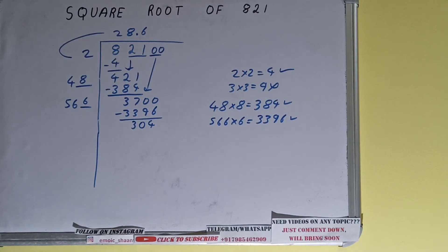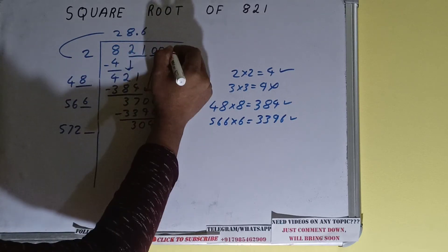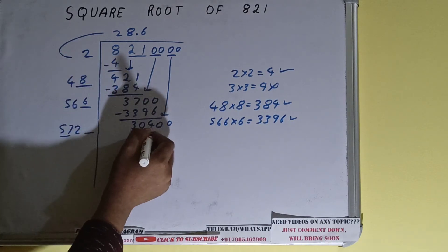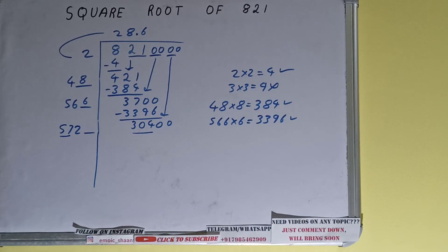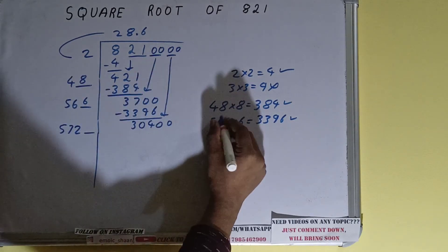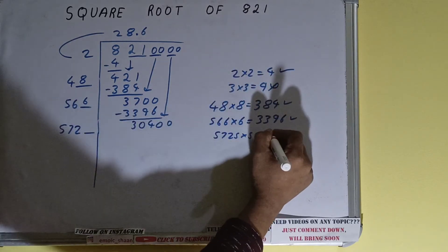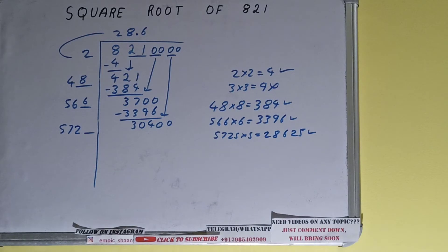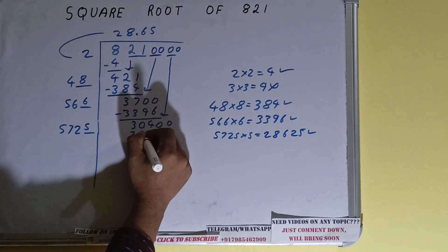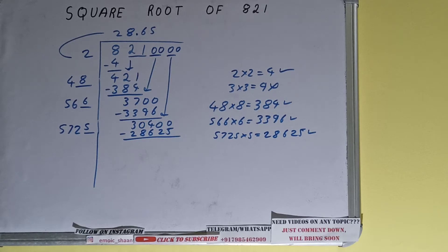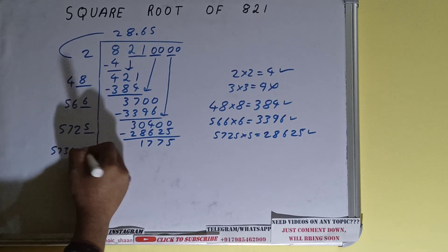566 into 6 we used, so add both: 566 plus 6 will be 572, and 1 digit extra. This number we need to make it big so bring the next pair down and it will become 30400. Now we can compare this 57 with this 304. 57 times 5 is 285, so we can try 5 times. 5725 into 5 we can try, it will be 28625, and that is good to use. So 5 here and 5 here, 28625. Subtract it.